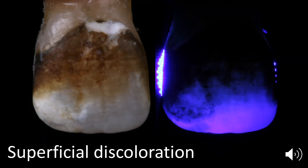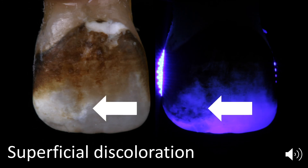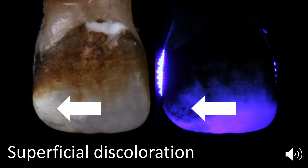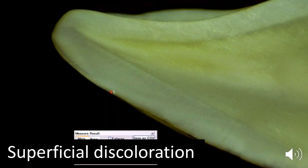Here is another discoloration. The white stain allows light transmission, which indicates that it is a superficial discoloration. When that tooth is cross-sectioned, the discoloration is only 35 microns thick, which could easily be treated with microabrasion.